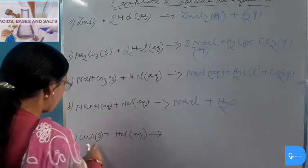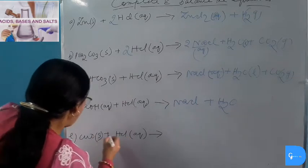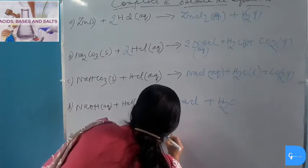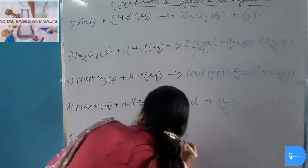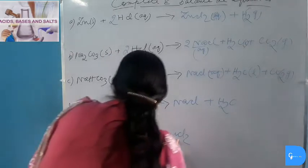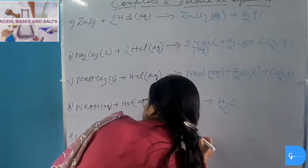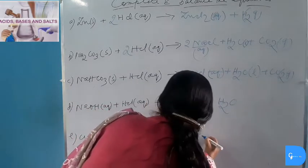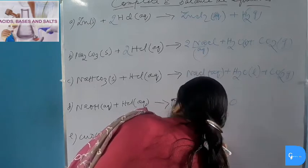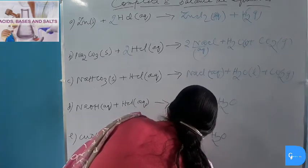Copper Oxide reacts with dilute Hydrochloric Acid to give Copper(II) Chloride plus Water. This is Copper(II) Oxide, so the valence of copper here is 2: CuO + 2HCl → CuCl₂ (aqueous) plus Water (liquid).